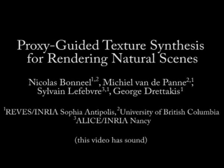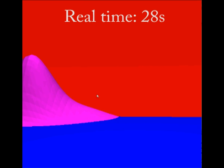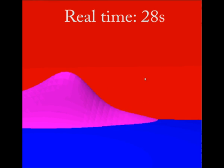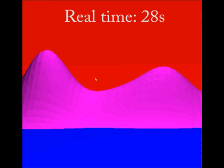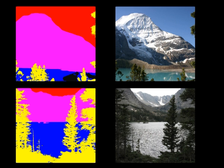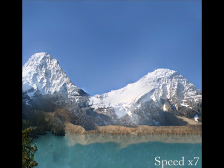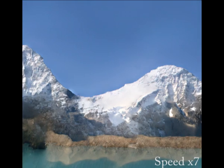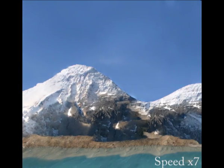We present a new proxy-guided texture synthesis approach for rendering natural scenes. Our method is useful for rapid pre-visualization. For example, a director or game level designer wants to create a mountain scene with a lake. With our approach, all that needs to be done is to design rough proxy geometry and then choose the appropriate annotated image to provide visually rich detail. Using our solution, it is now possible to navigate in these visually rich scenes at near interactive rates.